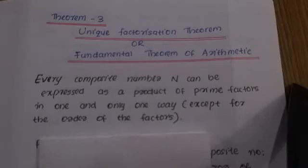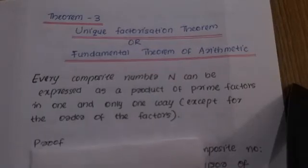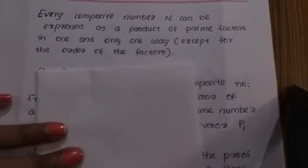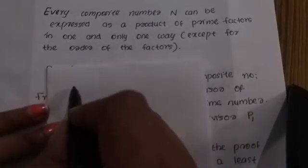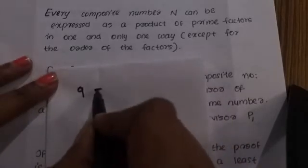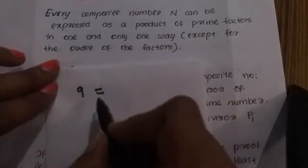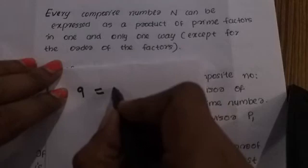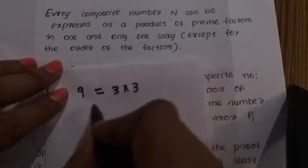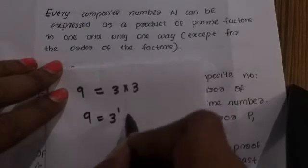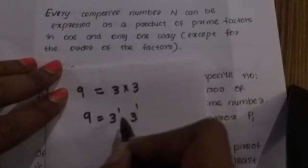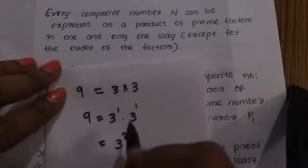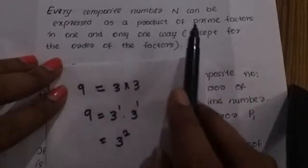Here is the proof. For example, take the composite number 9. The factors are 3 into 3, which equals 9. We can write this as 3 power 1 into 3 power 1, which equals 3 squared. This is the product of prime factors.